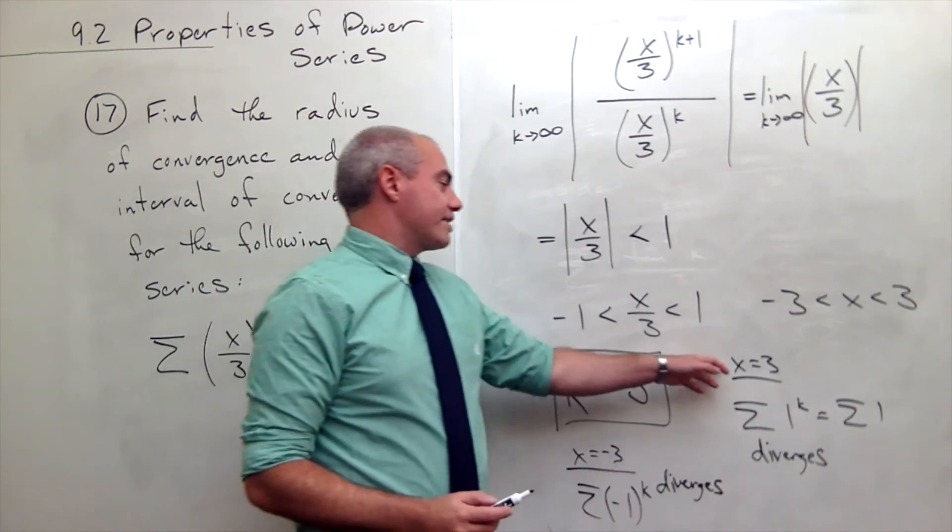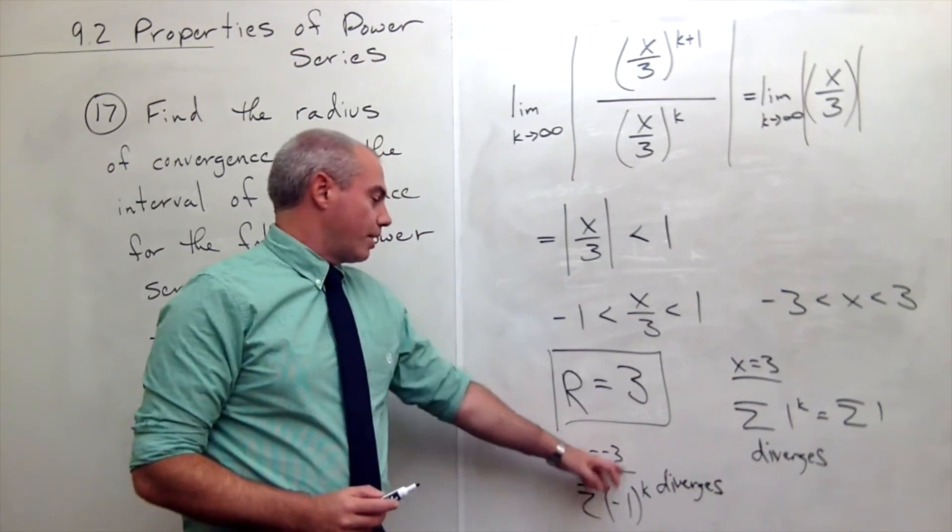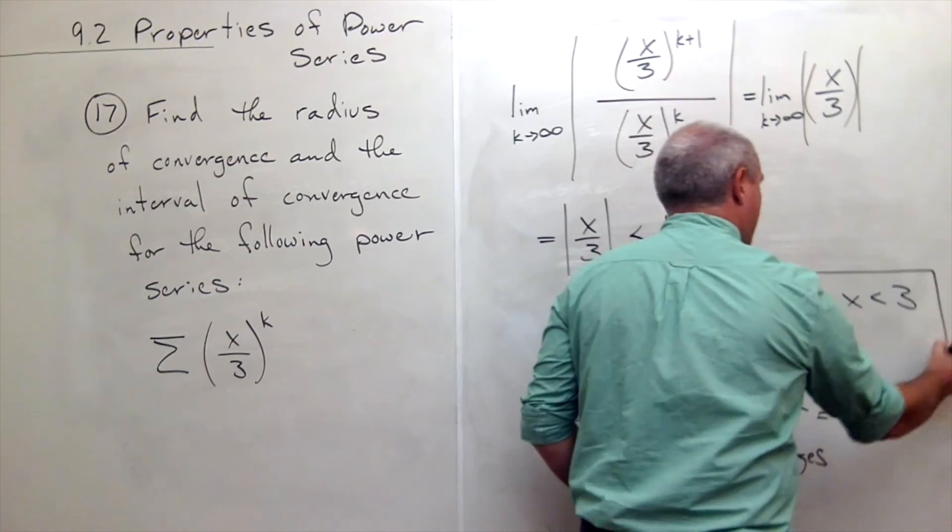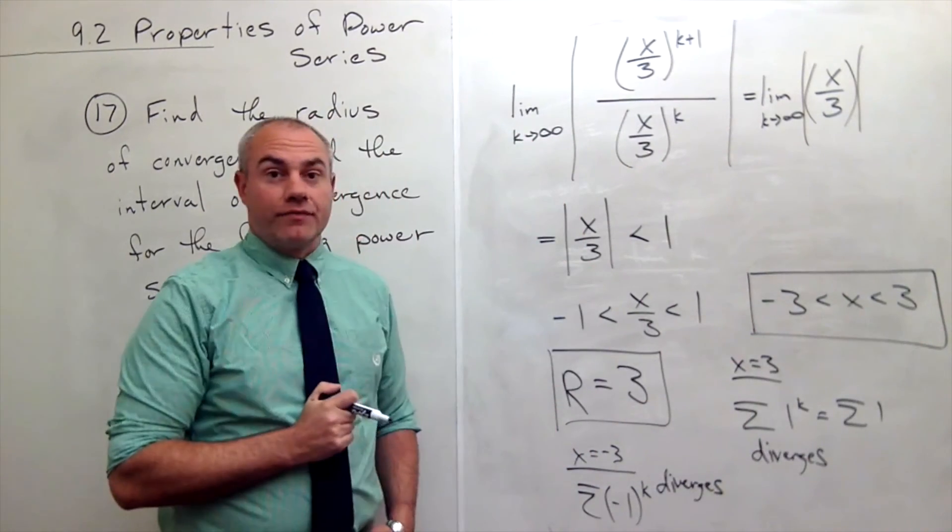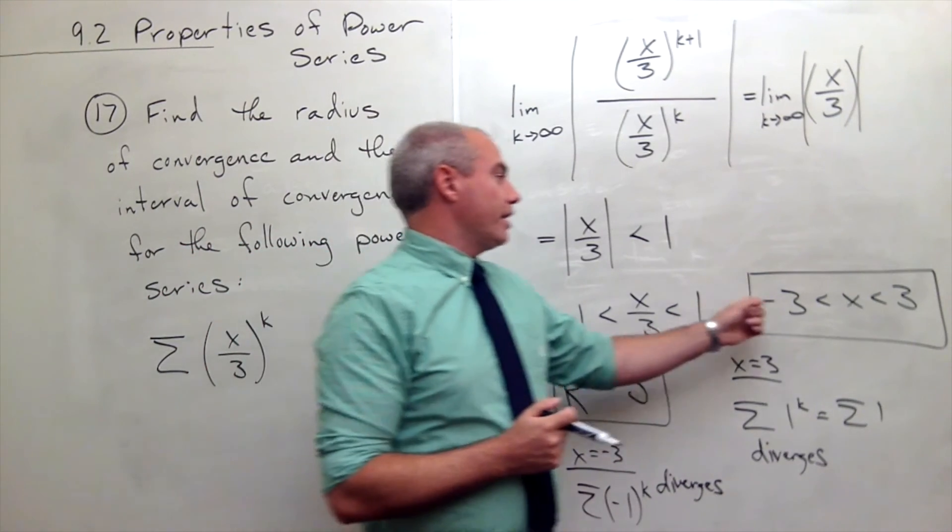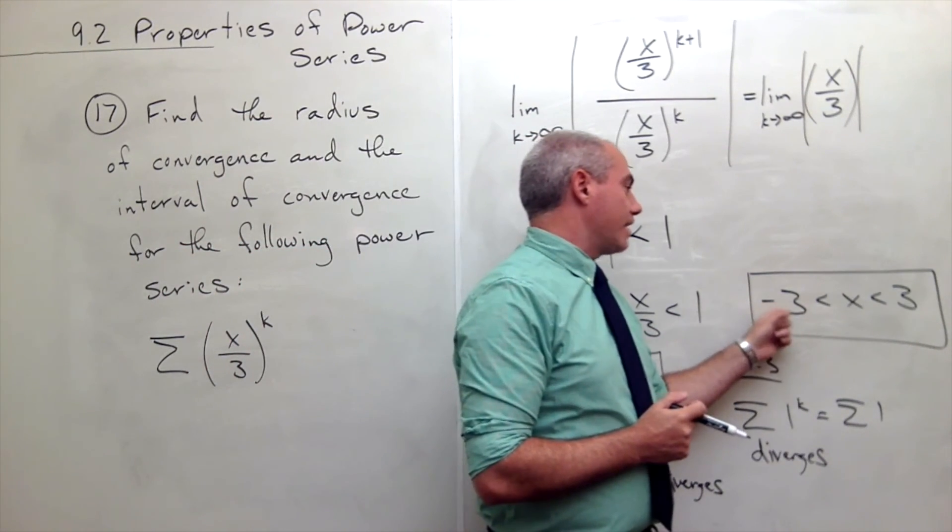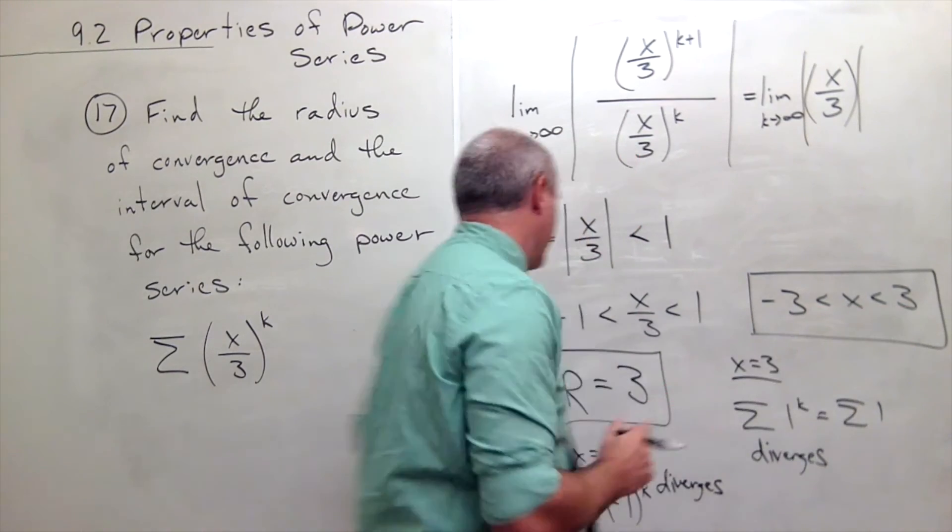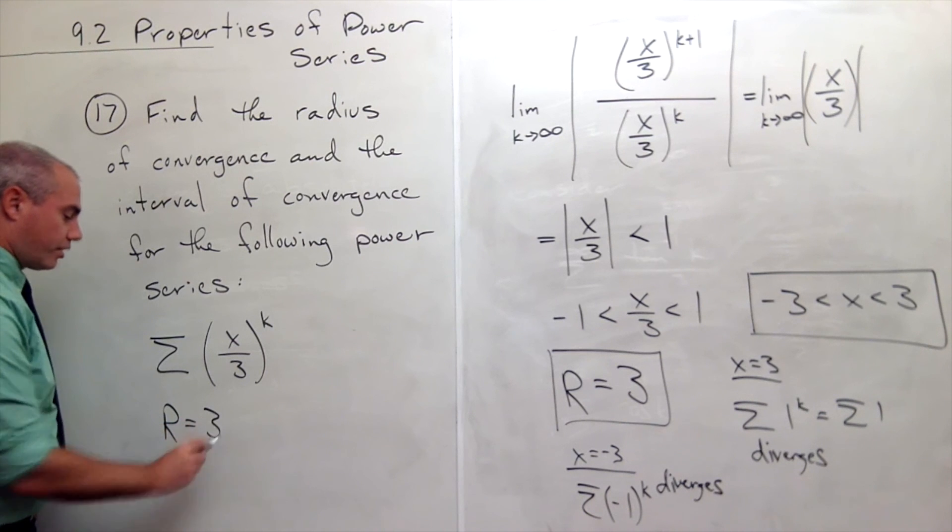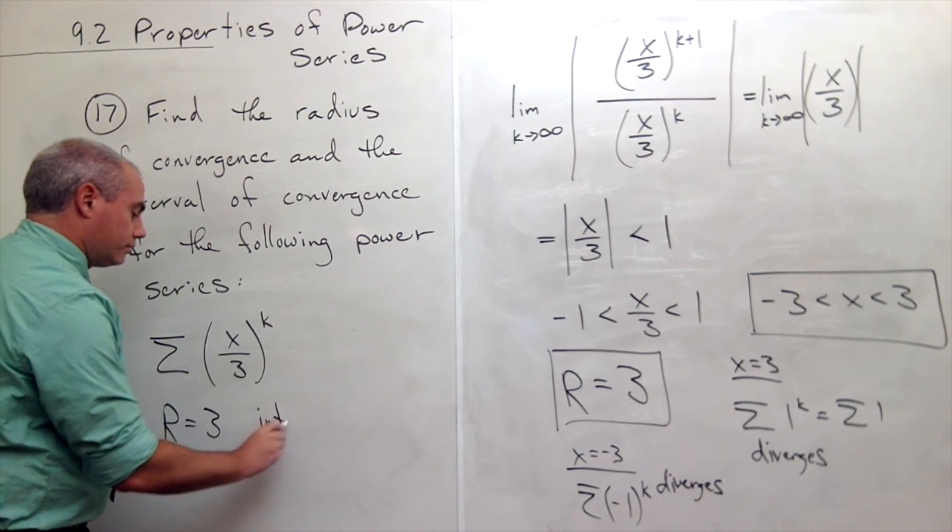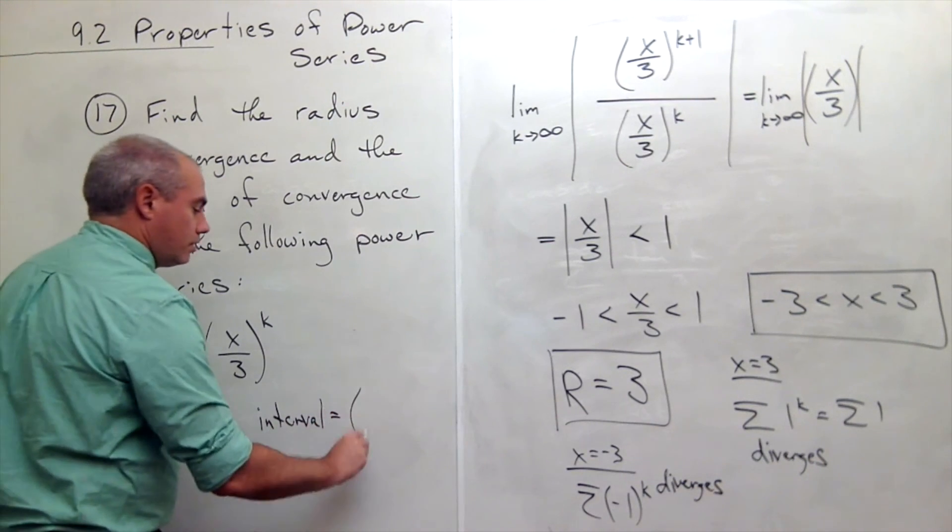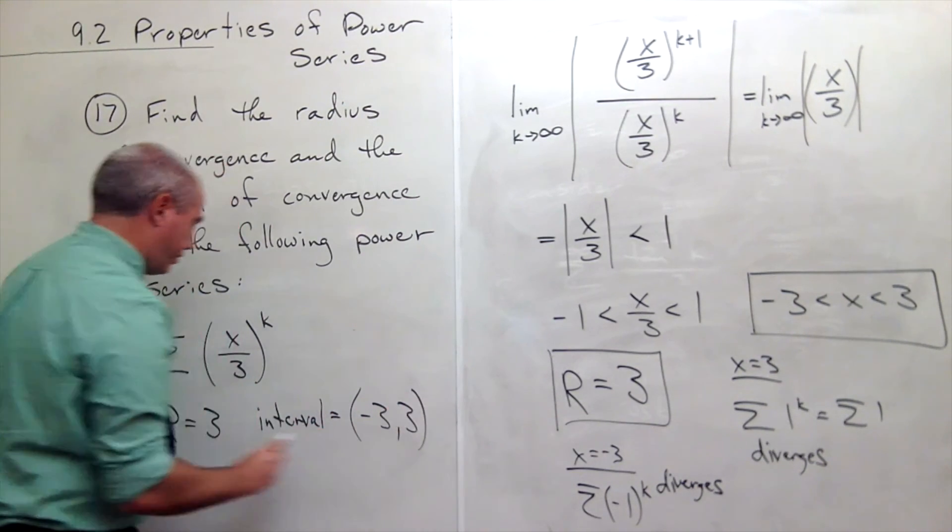So if x is 3, it diverges. If x is -3, it diverges. So this, in fact, is my interval of convergence. So my radius of convergence, in this case, is 3. Interval of convergence is -3 is less than x is less than 3. So if I wanted to write a final answer, I might say my radius of convergence is 3, and my interval is equal to the interval from -3 to 3.